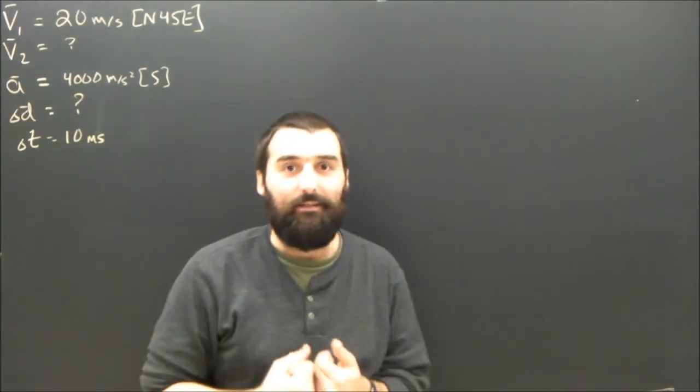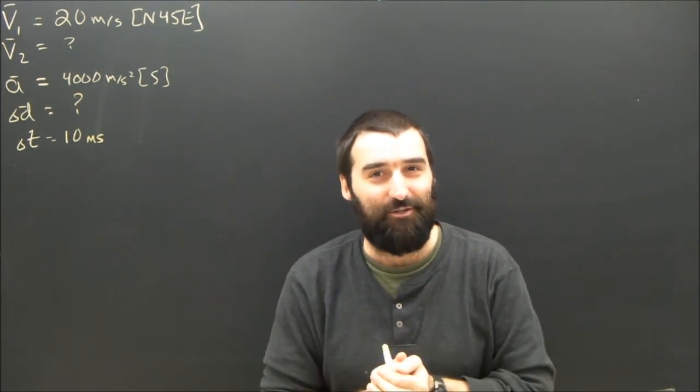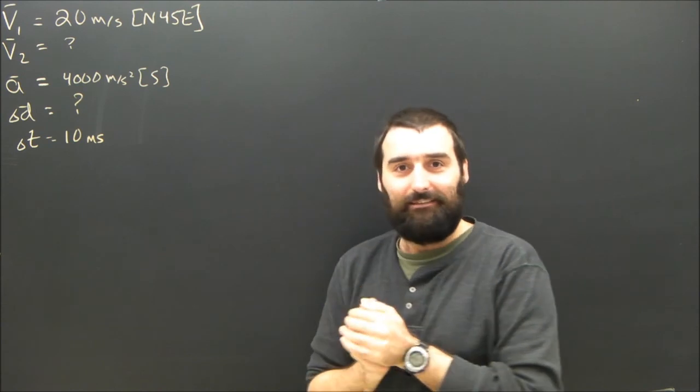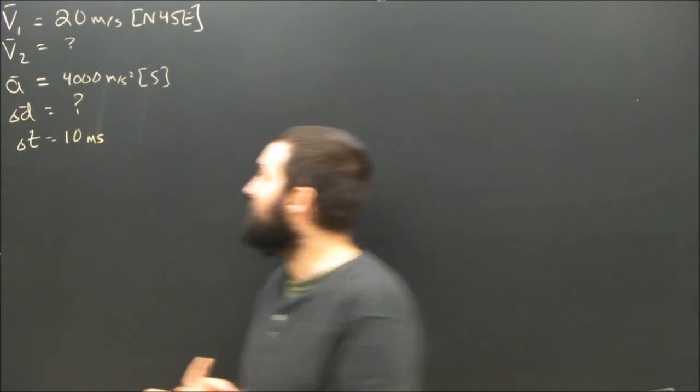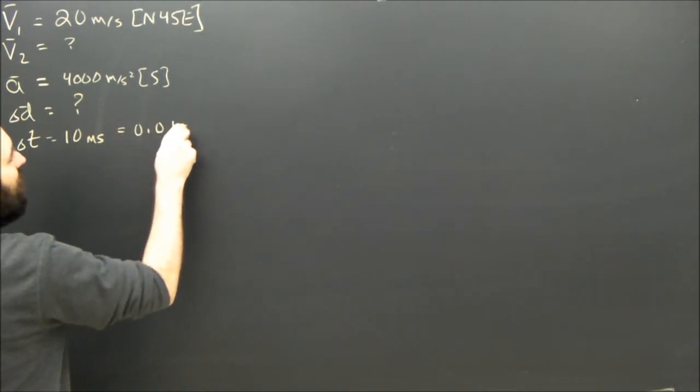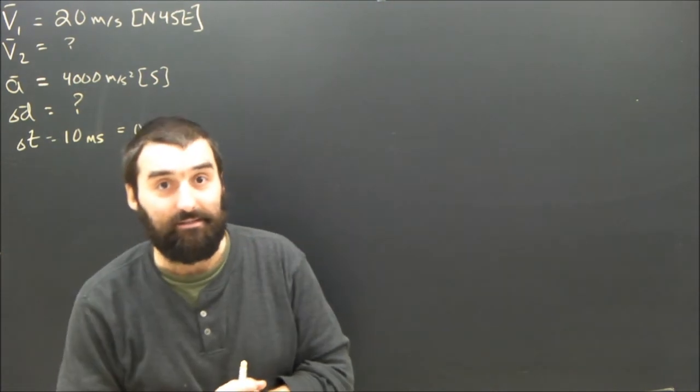Now, if you're one of my students, you will put up your hand and say, shouldn't that be meters per second? But of course you know it shouldn't be milliseconds. This is what the little m of course stands for, a thousandth of a second. So let's change that right now to 0.01 seconds, so that we don't have to worry about it anymore or make any slim sticks.